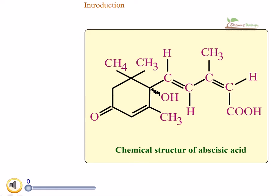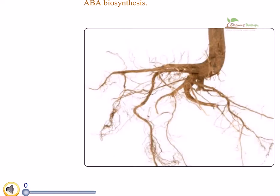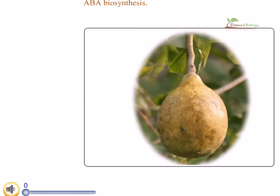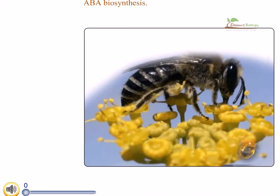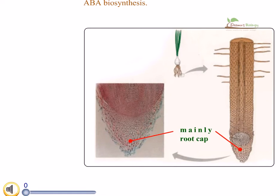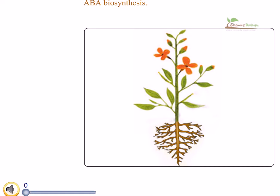Abscisic acid biosynthesis: abscisic acid can be found in different plant parts such as roots, stems, buds, leaves, fruits, and seeds. In addition, it has also been found in the xylem sap, phloem sap, and in the nectar. Abscisic acid is synthesized mainly in the root cap, however it is also synthesized in chloroplasts in a very small amount, after which it diffuses to other locations.